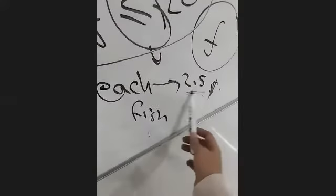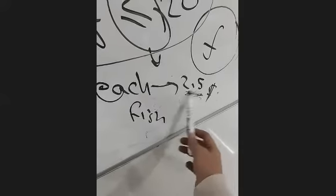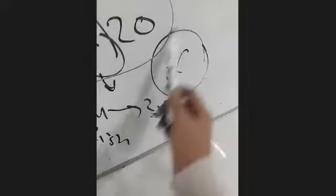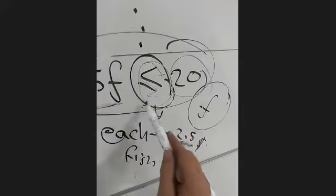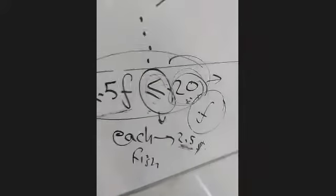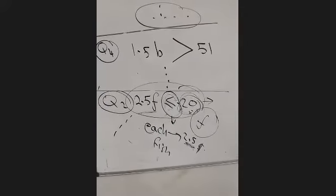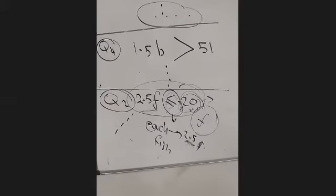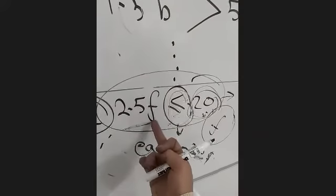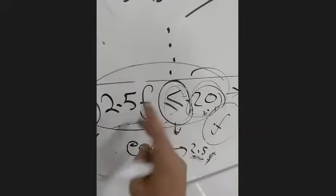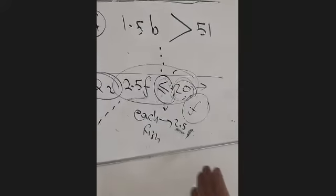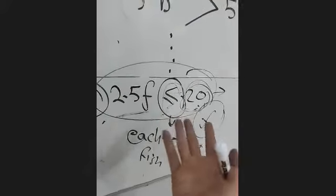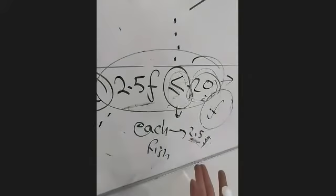In this question we don't know the number of fish, but we know the cost of each fish. So the cost of each fish multiplied by the number should be less than or equal to 20, because this girl has only 20 dollars. If we know the fish but not the amount of money, we do the opposite. The question has a variable — something unknown.